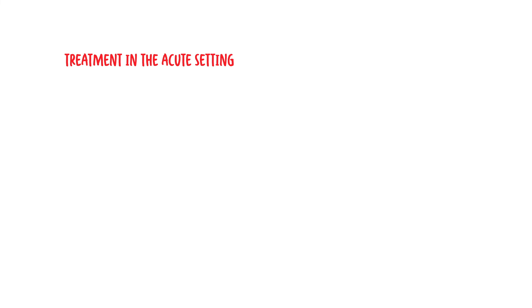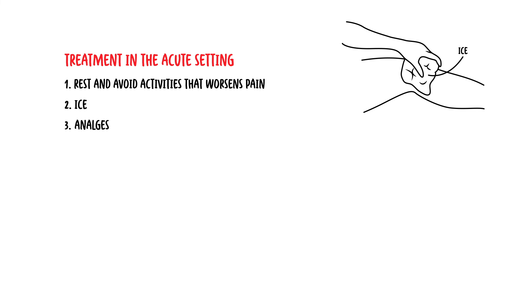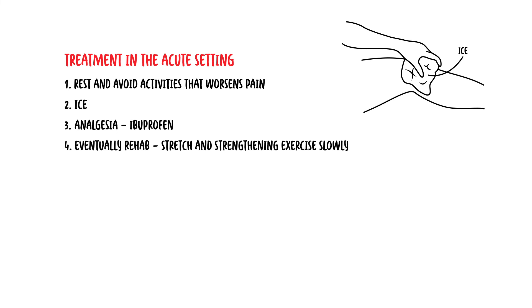Treatment of iliotibial band syndrome in the acute setting includes rest and avoiding activities that worsen the pain, using ice, analgesia such as ibuprofen, and then eventually gradually rehabilitation with stretches and strengthening exercises. People should also slowly return to their sports or regular activities at less than 50% of normal capacity.